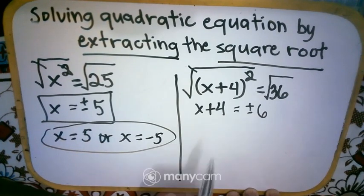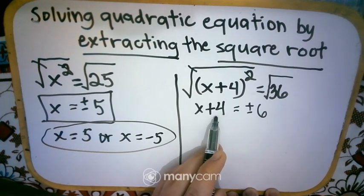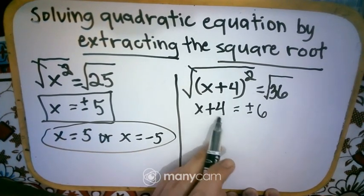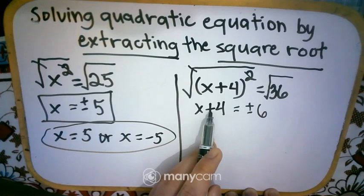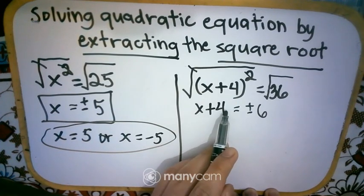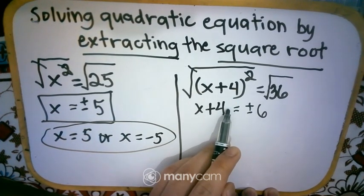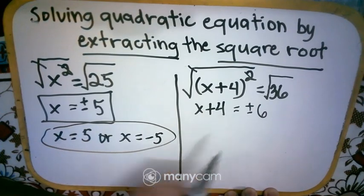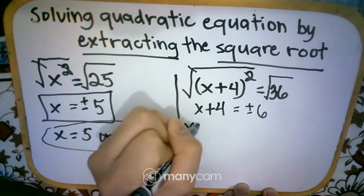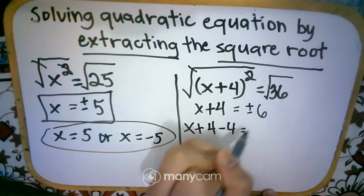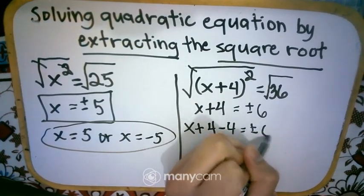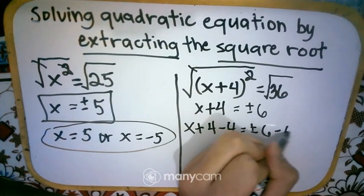So next one is 4. So how are we going to remove 4 so that we can have the variable alone? So to remove positive 4, we're going to subtract that by 4. Because if we have 4 minus 4, we have 0.